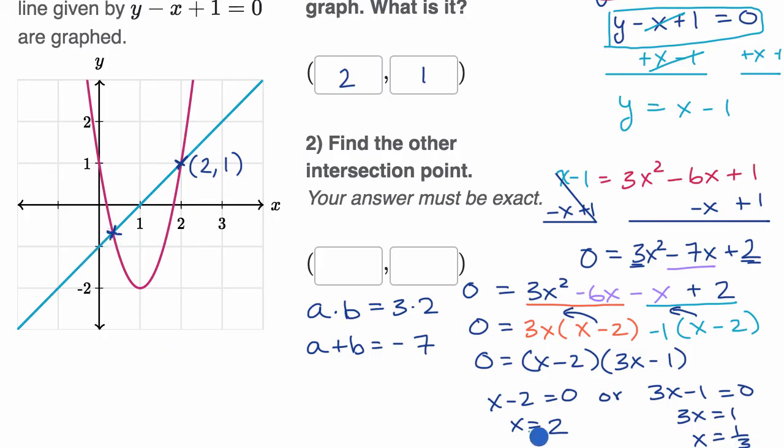So we figured out we already saw the solution where x equals two. That's this point right over here. We already typed that in. But now we figured out the x value of the other solution. This is x equals one third right over here. So our x value is one third. But we still have to figure out the y value.